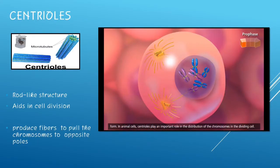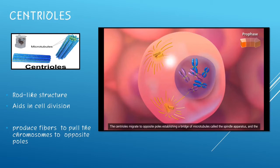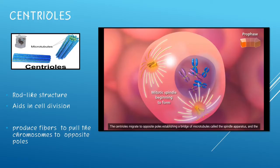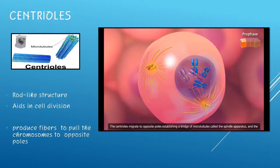The centrioles appear as rod-like structures and aid in cell division. During mitosis, they play an important role in the distribution of chromosomes. They migrate to the opposite poles and produce a spindle apparatus.